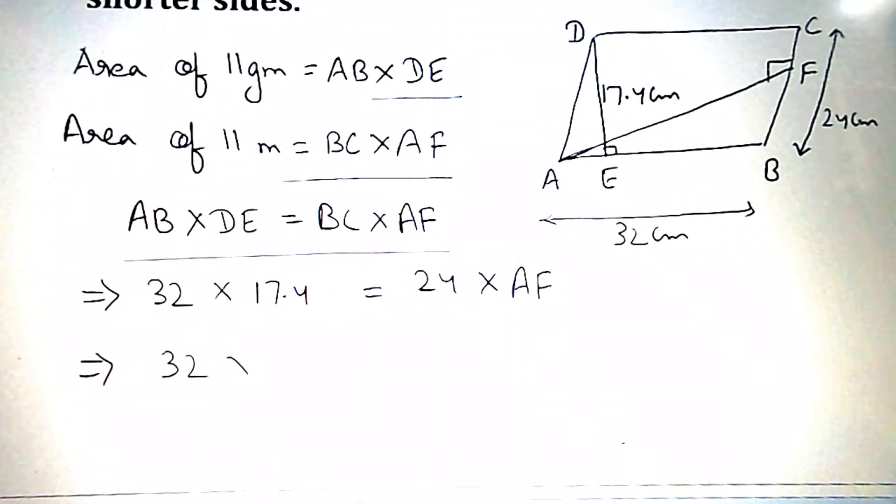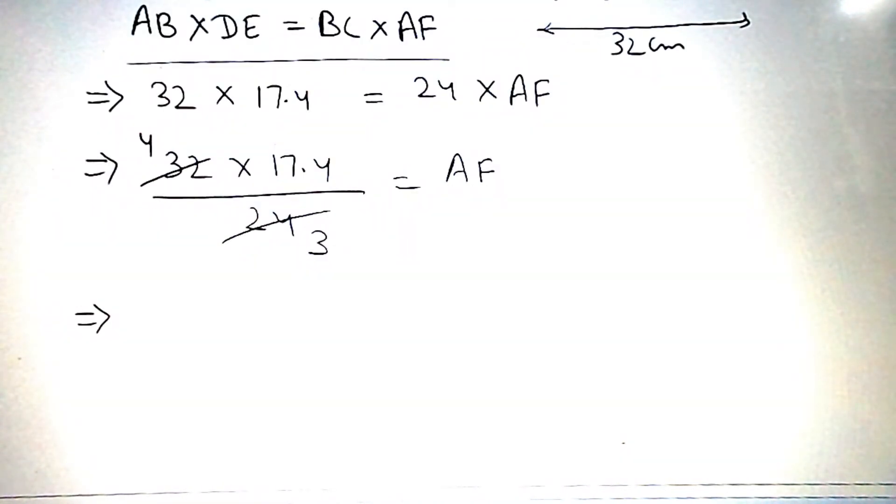32 into 17.4 divided by 24 is equal to AF. 24 and 32 is cancelled by 8, in 3 and 4 times. On multiplying then we get 69.6 divided by 3 centimeter is equal to AF, that is 23.2 centimeter is equal to AF.